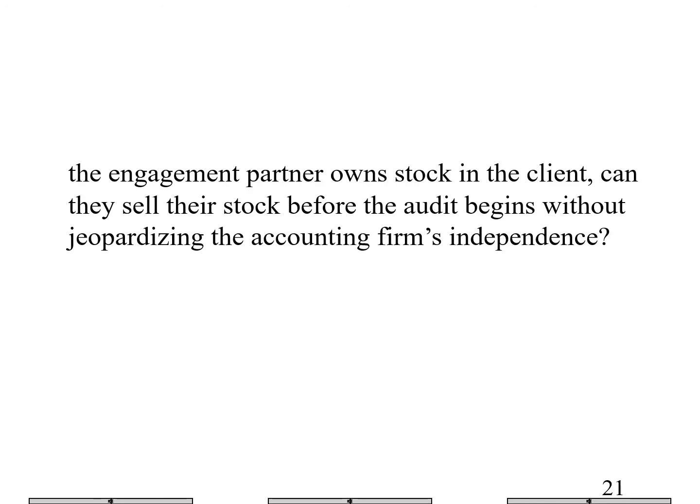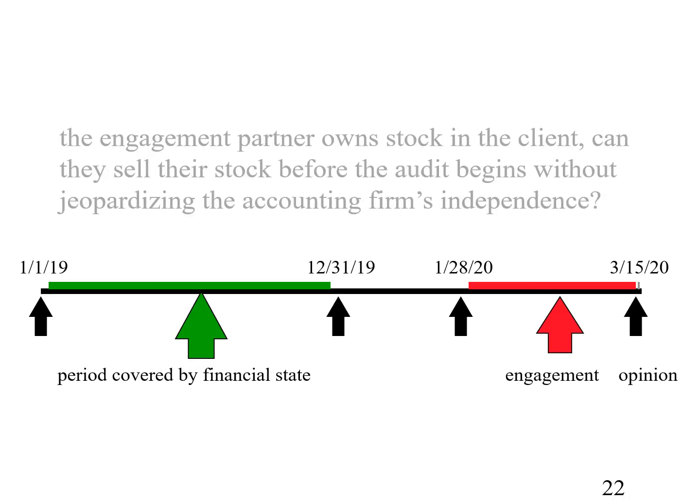The person who's going to become the engagement partner owns stock in the client. Can they sell their stock before the audit begins without jeopardizing the firm's independence? Yes — it's the same scenario. The letter goes out, the partner realizes this is probably going to become a client, and they sell their stock. They're not prohibited from having a financial interest during the period of the financial statements, only during the period of the engagement. So if you get rid of the stock before the engagement begins, independence will not be impaired.